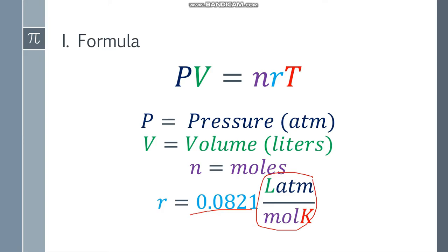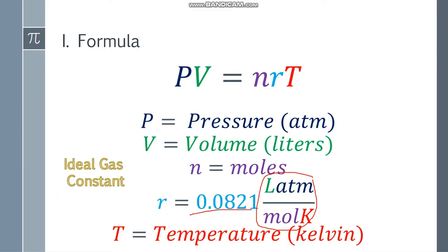The R is always 0.0821 with this unit: liters atmosphere per mole Kelvin. That's why you need liters, atm, and kelvin for the temperature, because it will cancel out. T represents temperature in Kelvin, which is also always required. Another term for R is the Ideal Gas Constant, so you can't change this. 0.0821 is always.